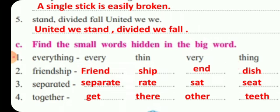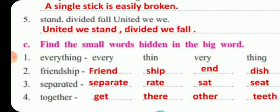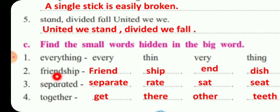The next word is 'friendship.' Two simple words are 'friend' and 'ship' — these are two hidden words. Then E-N-D, 'end,' and then D-I-S-H, 'dish' — dish is another word.